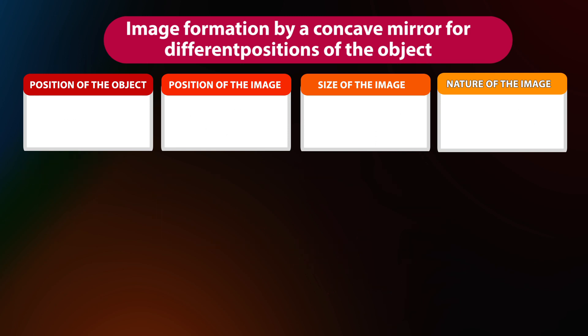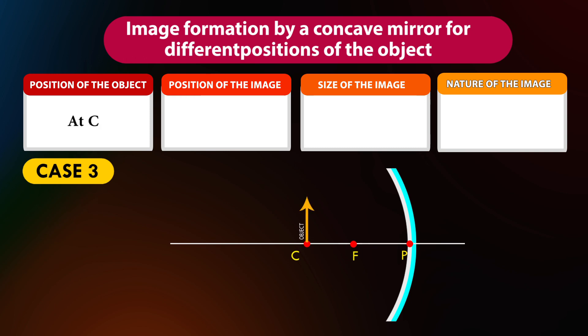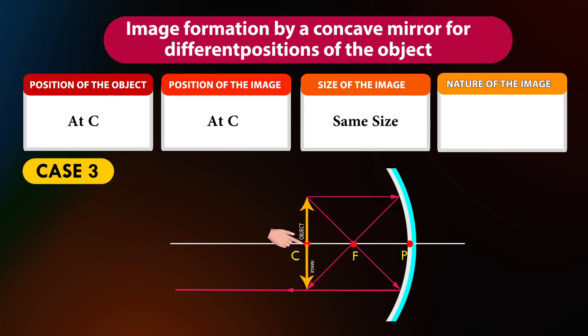Case 3: If the position of the object is at C, the position of the image will also be at C. The size of the image will be the same as the object. The nature of the image is real and inverted.